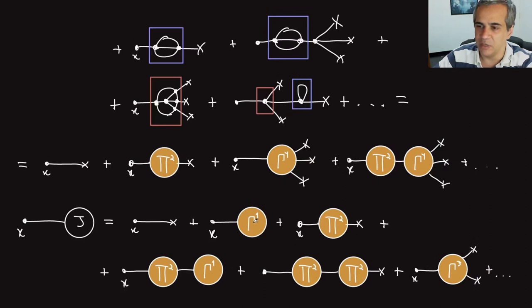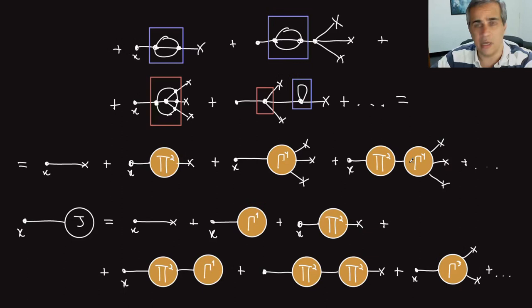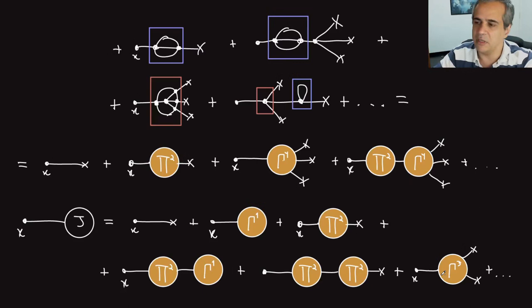I am defining the sum over all 1PI diagrams for one external leg, two external legs, three external legs, four external legs, and so on. Some of these will be zero for a particular interaction at all orders — as we've seen, for lambda phi 4 all odd ones vanish, for lambda phi 3 all even ones vanish. So you can see there are trends that depend on the interaction. But in general, you can write the series for the classical field in terms of these 1PI sums.